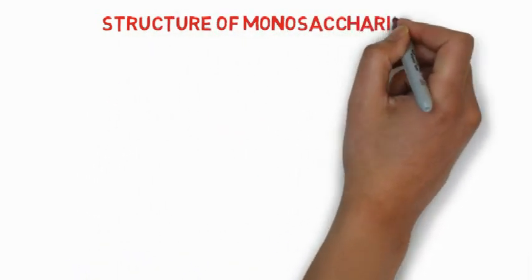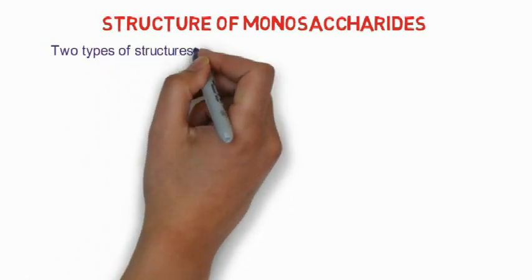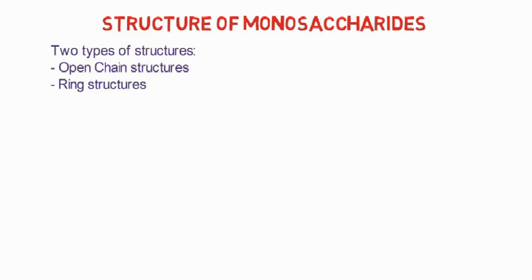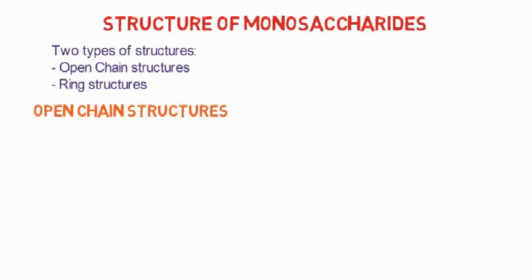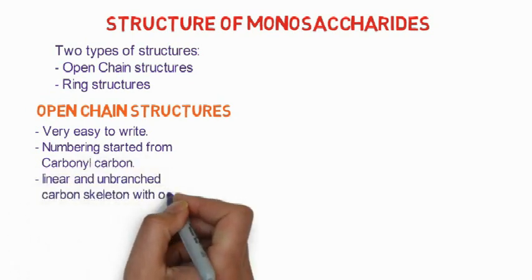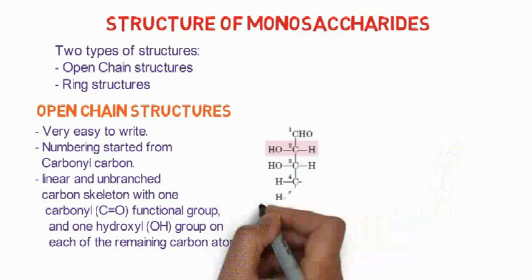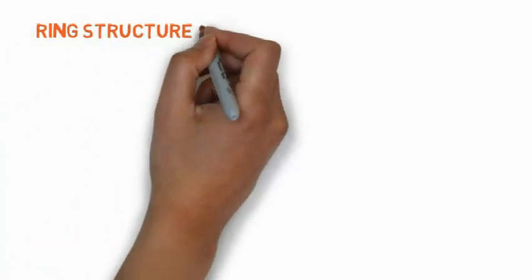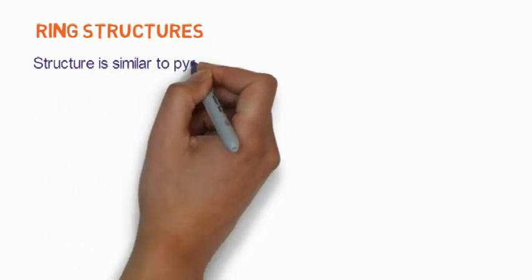Now we will discuss the structure of monosaccharides. The structure is usually explained in two forms: the open-chain structure and the ring structure. The open-chain structure is straightforward to write — the numbering starts from the carbonyl carbon. This is a linear, unbranched carbon skeleton with one carbonyl group and a hydroxyl group on each of the remaining carbons.